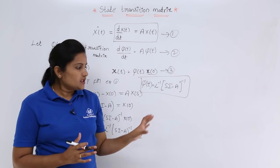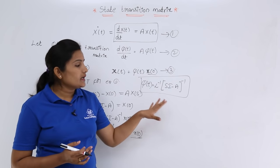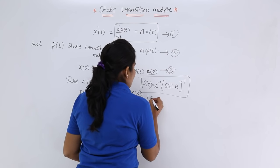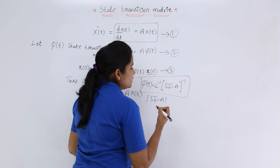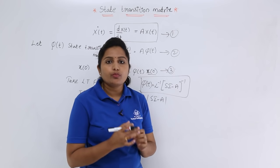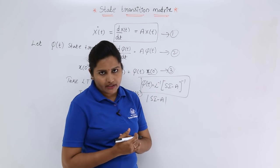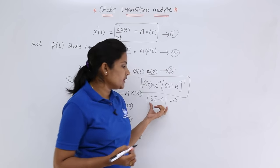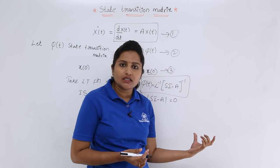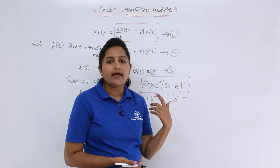Note that the state transition matrix is not unique, whereas the transfer function is unique. The determinant of (sI − A) gives the characteristic equation. Setting |sI − A| = 0 and solving gives the poles and eigenvalues and other important parameters of the system.